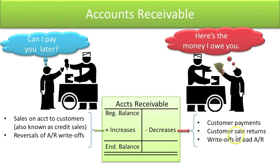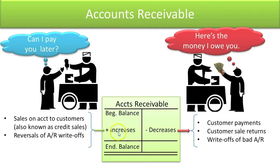If your customer returns a good that they don't want, you often will give them a reduction in the receivable. So they owed you $100, and they say they didn't want that anymore — you would reduce the amount they owe you by that $100.